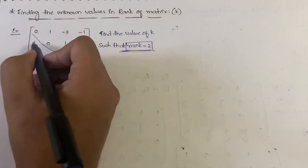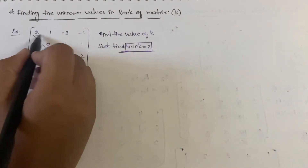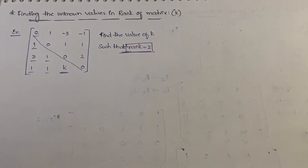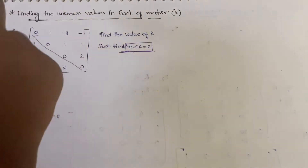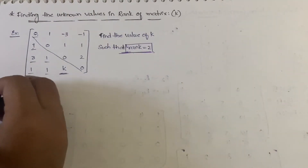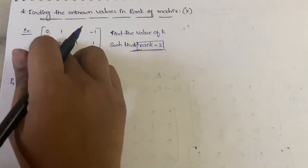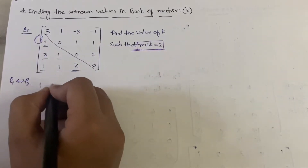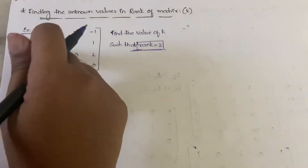For the first operation, let us interchange R1 and R2. When performing row transformations we normally use the first row, but here the first element of R1 is zero. With zero you cannot perform any operation — even if you add, multiply, divide, or subtract, the values won't change. So whenever the first element is zero, interchange R1 and R2.